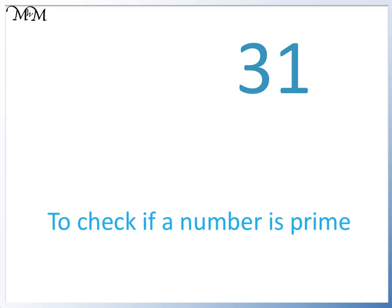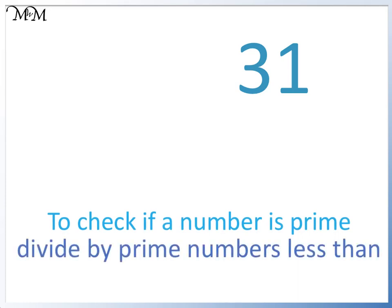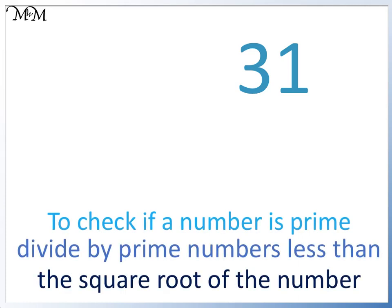We want to see if other numbers divide into the number or not. To check if a number is prime, divide by prime numbers less than the square root of the number. If we don't know the square root, we just look at the closest. So 31 is close to 36, which has a square root of 6. We only need to check the prime numbers up to 6.